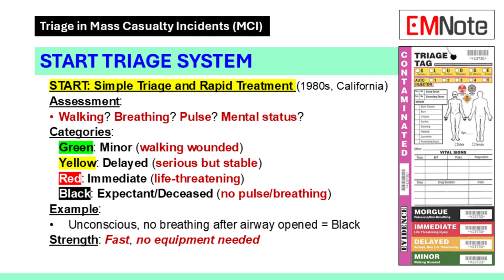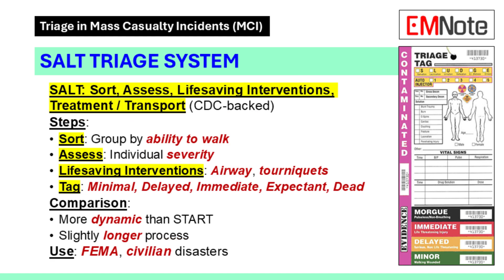START's strength is simplicity: 30 seconds per patient, no equipment needed. Then there's SALT — Sort, Assess, Life-saving interventions, Treatment/Transport. It's newer, backed by the CDC and trauma experts. SALT starts with a group sort: everyone who can walk, move over here. Then it assesses individuals. The twist? You can do quick interventions like opening an airway or slapping on a tourniquet before tagging. Categories are similar: minimal, delayed, immediate, expectant, dead. SALT's more flexible but takes slightly longer.